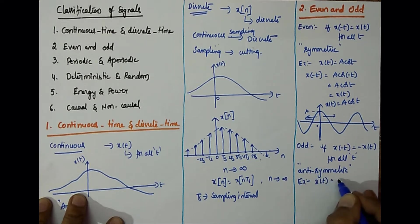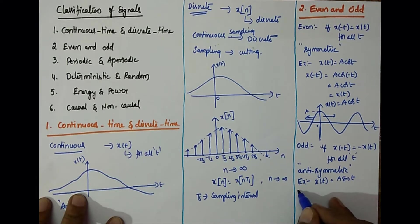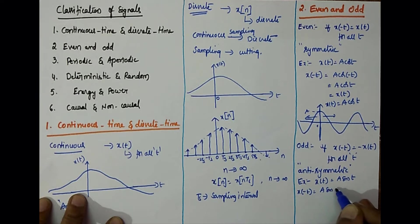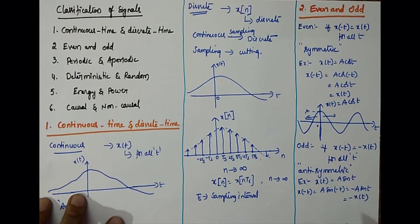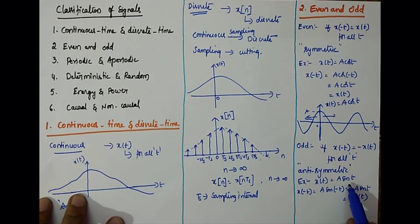Let's take x of t equal to A sin t as an example. What is x of minus t? A sin of minus t, and we know sin of minus t is minus sin t. So minus A sin t, which is nothing but minus x of t. Therefore x of minus t is equal to minus x of t, and hence the sine signal is said to be an odd signal.